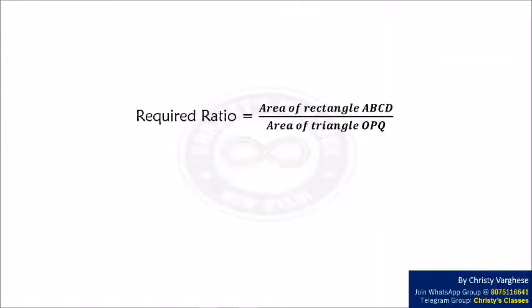The required ratio is equal to area of rectangle ABCD divided by area of triangle OPQ. From the previous slide we know that area of rectangle ABCD is equal to 8 times the area of triangle OPQ. Therefore we get the required ratio is equal to 8.